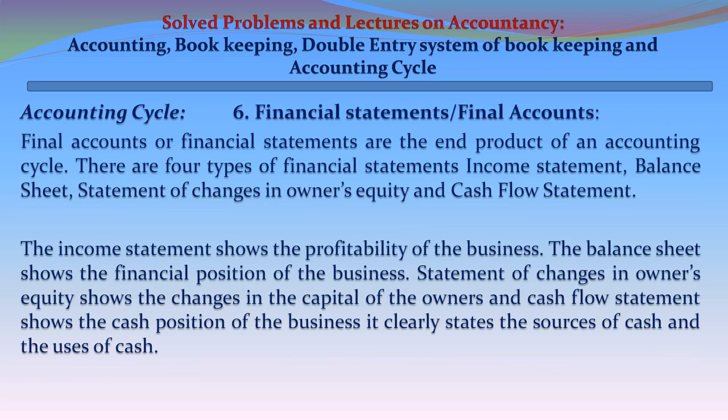Step 6 - Financial Statements or Final Accounts: Final accounts are the end product of an accounting cycle. There are four types of financial statements: income statement, balance sheet, statement of changes in owner's equity, and cash flow statement. The income statement shows the profitability of the business. The balance sheet shows the financial position. The statement of changes in owner's equity shows changes in the capital of the owners. The cash flow statement shows the cash position, clearly stating the sources and uses of cash.